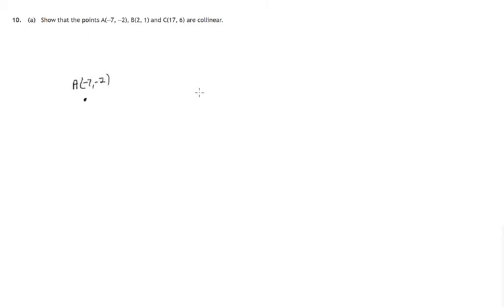So let's have a look at the picture. There's the point A, negative 7, 2. Somewhere along here is the point B 2, 1. And the point C, 17, 6. Now I'm going to look at a couple of straight line segments. Starting at A, ending at B. And starting at A and ending at C.